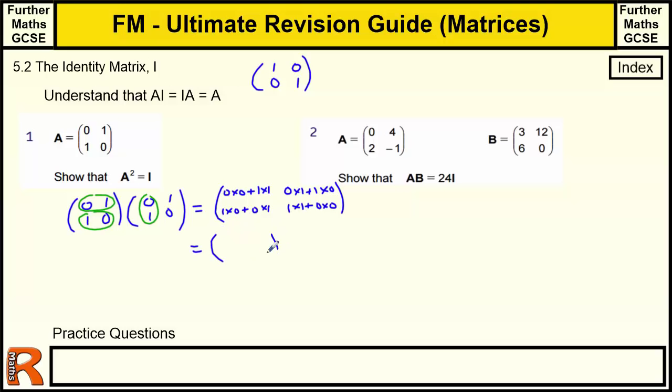And that equals... That is 0 plus 1. This is 0 plus 0. That is 0 plus 0. And that's 1 plus 0, which equals I. So that's showing that A squared equals I.